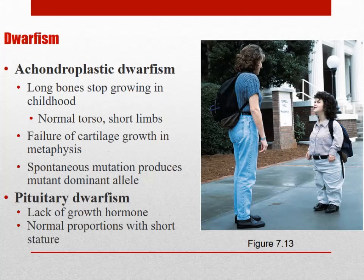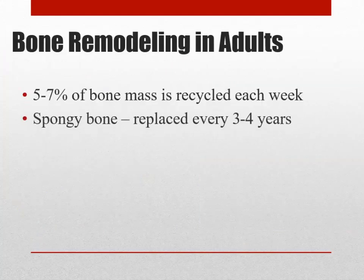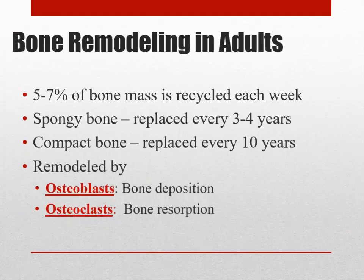Two types of dwarfism: pituitary dwarfism is when the whole skeleton is smaller, whereas achondroplastic dwarfism is when the trunk is normal but the limbs are shortened. Keep in mind your two main cells: osteoblasts make the bone, and osteoclasts shape and resorb the bone.